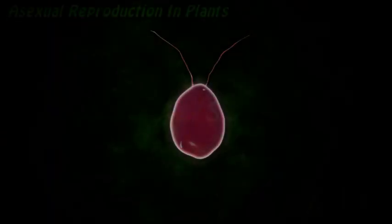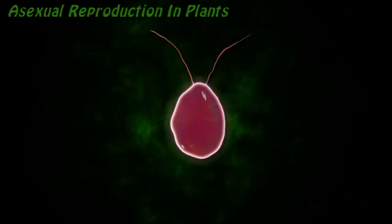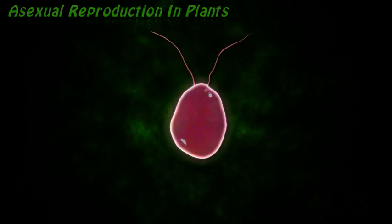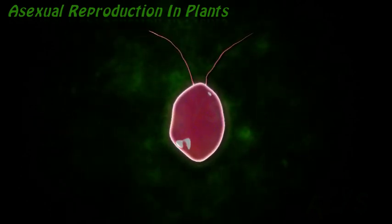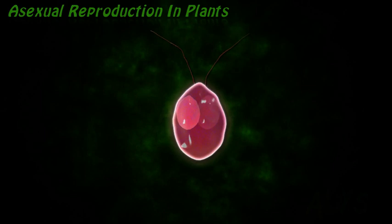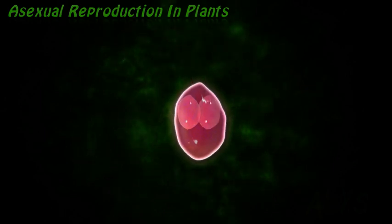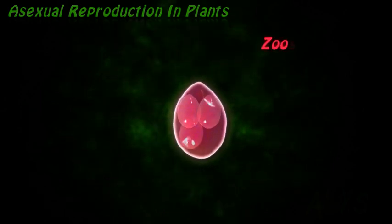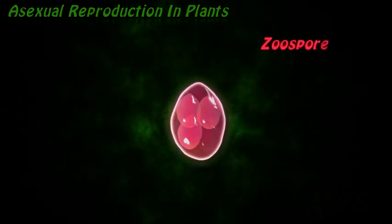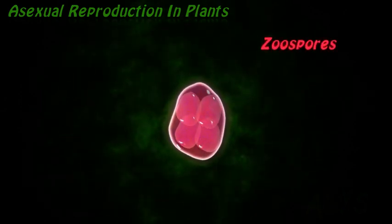Let's discuss asexual modes of reproduction in plants. Some simple plants form special structures like zoospores, which later each one grows into an organism.